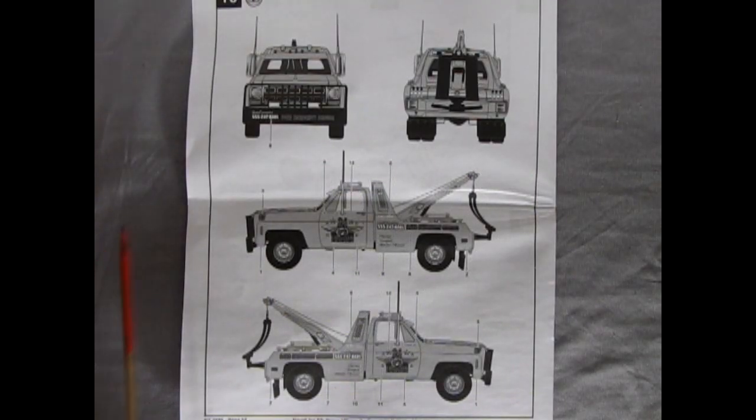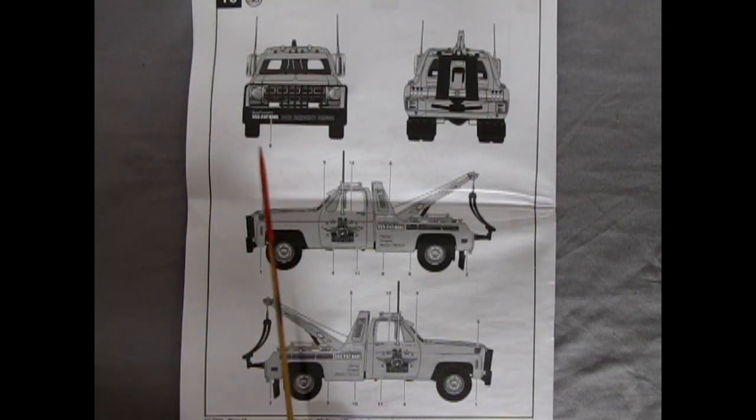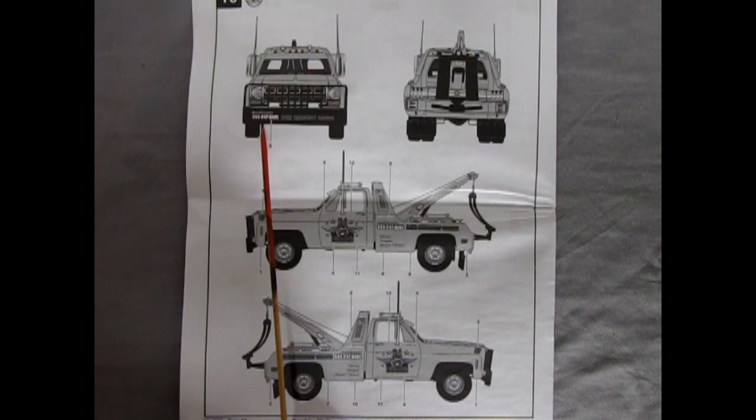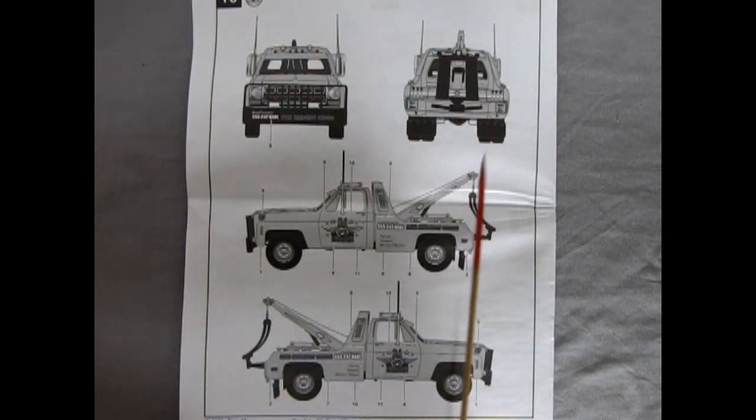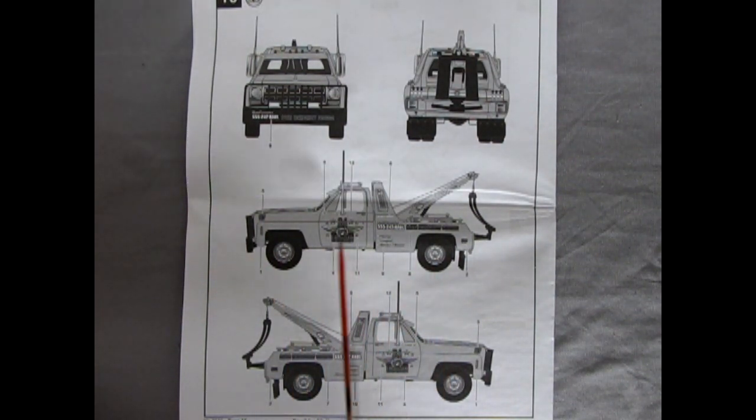And our final panel shows where all the decals go and here we have the 555-247 hall for the phone number for this tow truck as well as the back and then we've got the nice sides of our tow truck with the emblems.